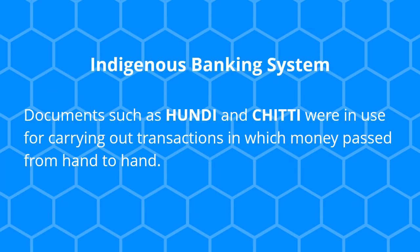The indigenous banking system used specific documents. The two key documents were Hundi and Chitti. These documents were used for carrying out transactions in which money passed from hand to hand.